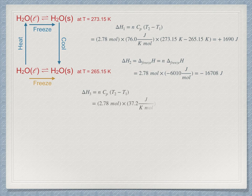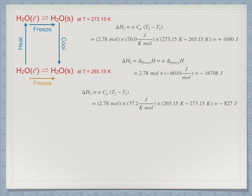Finally, the last step is like the first one, except the temperature change has the opposite sign, and we are using the heat capacity for solid ice. Its value is minus 827 joules.